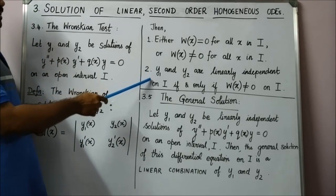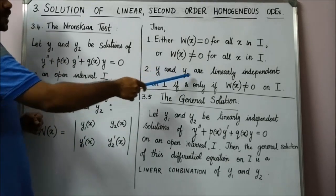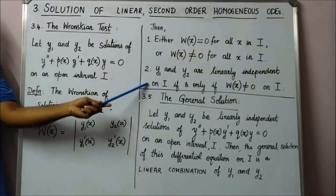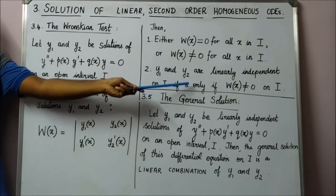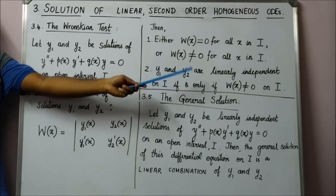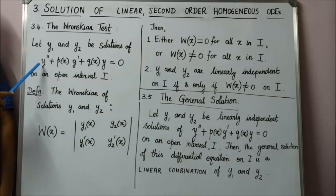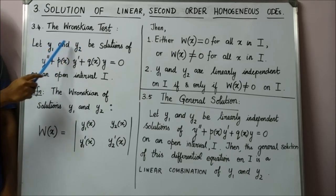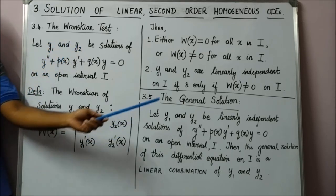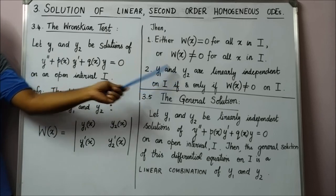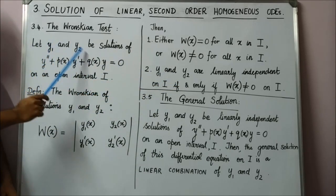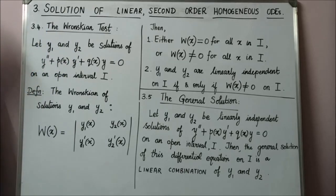The second property: y1 and y2 are linearly independent on the interval I if and only if the Wronskian is non-zero on I. So the Wronskian tells you about the linear independence of the solutions.